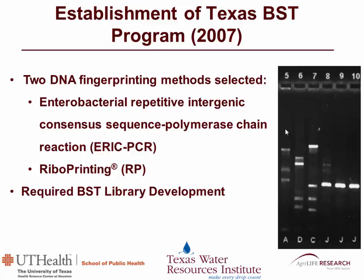Our bacteria source tracking program was established in 2007. We had done about a five-year study comparing a number of different BST methods, and what we found is that using a combined method of ARIC PCR and riboprinting, we were able to pretty accurately determine what the sources of the bacteria were in our water. Both of these methods require the development of a BST library, which can be very expensive, and both are considered DNA fingerprinting methods, producing fingerprints that look much like what's shown here.